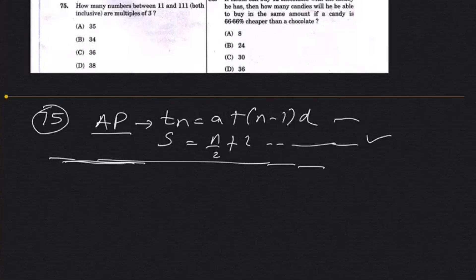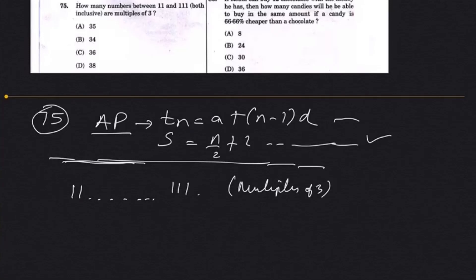I would prefer to use this method for this question and for these kinds of questions. So let's explain: how many numbers between 11 and 111 are multiples of 3? Multiples of 3 — what do I mean? 3, 6, 9, 12, 15, 18 — it wants multiples of 3. So let's take a quick solution.